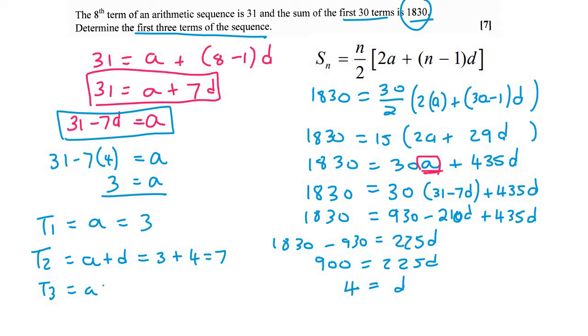And then term 3 would be A plus 2D, which is equal to 3 plus 2, sorry, 2 times 4, which is going to give us 11. And so these are the first three terms of that sequence.